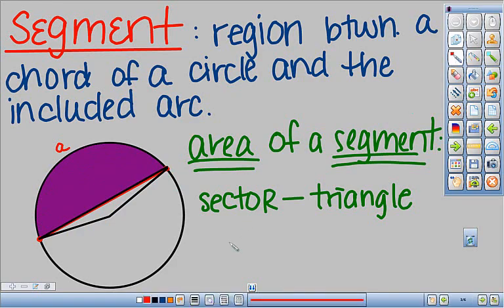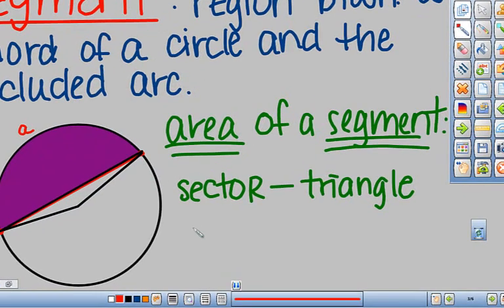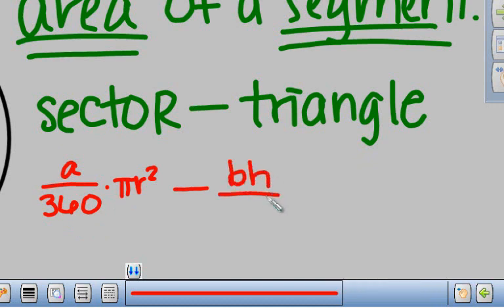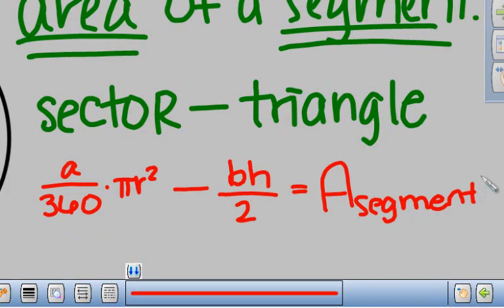So as a formula, that looks like A over 360 times pi r squared, so that's the sector, minus area of a triangle, which you know is base times height over 2. And this will be the area of a segment.